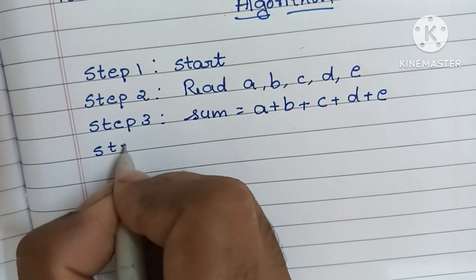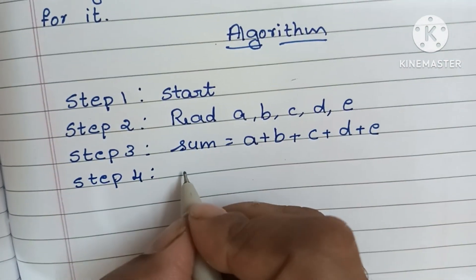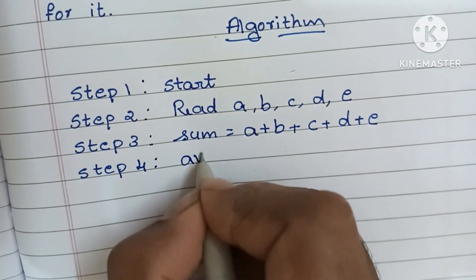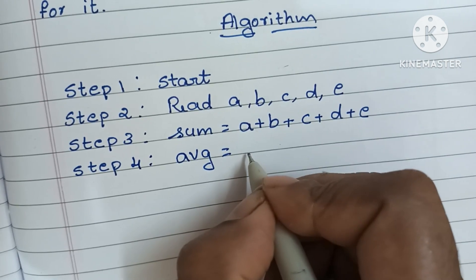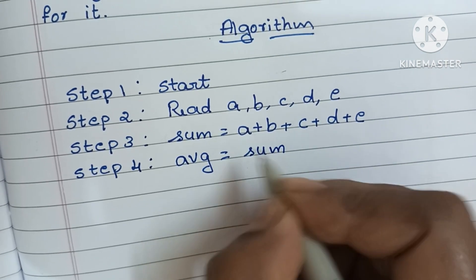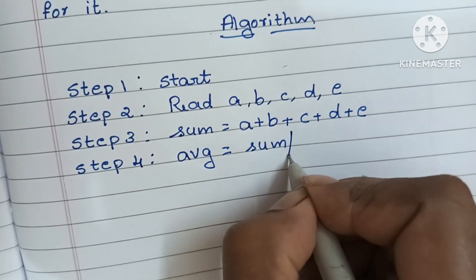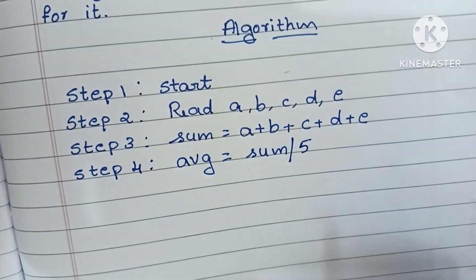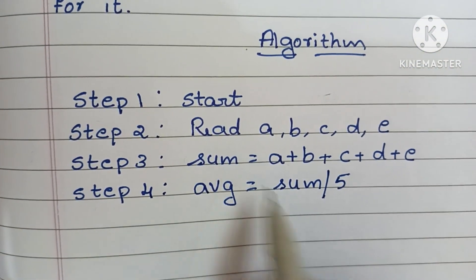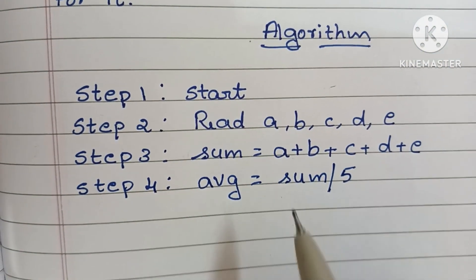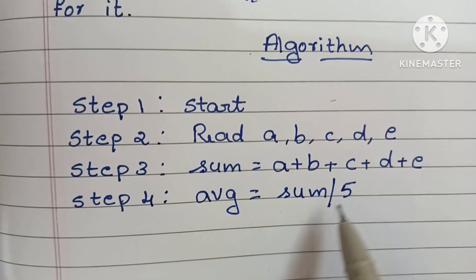In step four, we have to find the average. The average formula is the sum of five numbers divided by five. Since we already found sum, we can directly write sum divided by five.